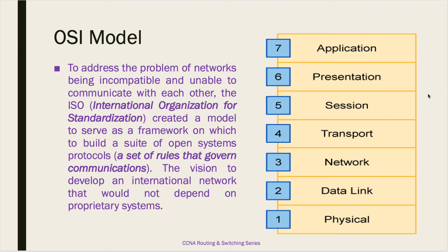Followed by layer 3, we have layer 4, which is the transport layer. As the name says, it's responsible for transporting data from one place to another. The transport layer defines services to segment, transfer, and reassemble data for individual communication between end devices. At this layer there are two protocols — TCP and UDP — and we'll learn about these in more detail later. This layer is responsible for transporting your segments primarily.